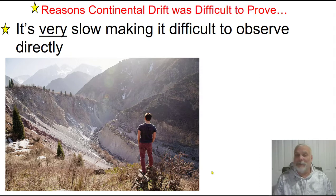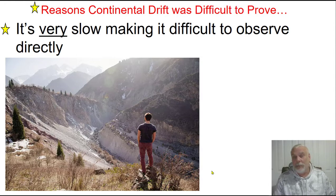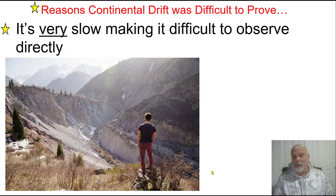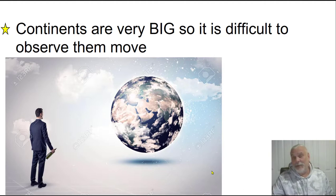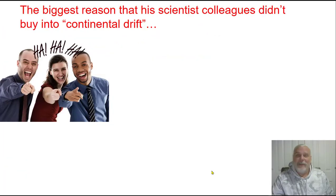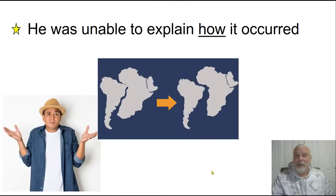The reasons why continental drift was difficult to prove is that it's an extremely slow process — it makes it very difficult to observe directly. If you were to sit there and watch a snail crawl across the floor, you can see it, but continental drift is an even slower process. And not just that — continents are extremely big, so it's very difficult to observe them as they move. If you're standing on the continent, which you are right now, you can't even really tell it's a continent. The biggest reason Wegener's colleagues didn't buy into continental drift was that Wegener couldn't explain how the continents moved.